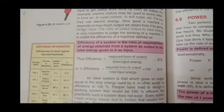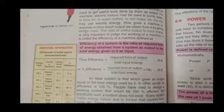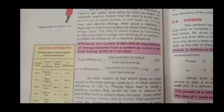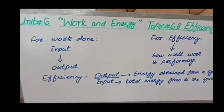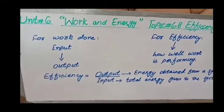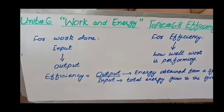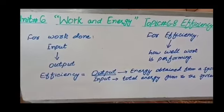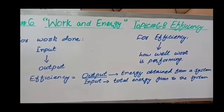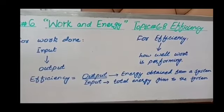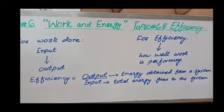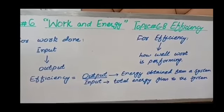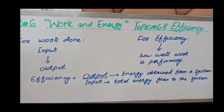In the definition, we have two things: energy obtained, that is output, and total energy, which we take as input. The formula of efficiency is output divided by input — the ratio of output to input. Output is the energy obtained from a system, and input is the total energy given to the system.